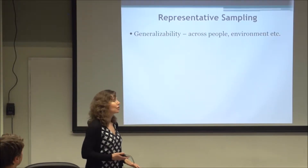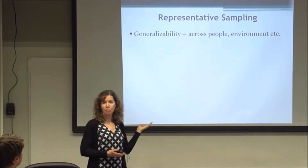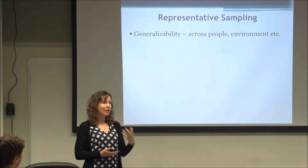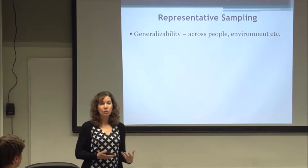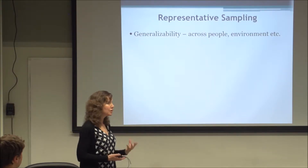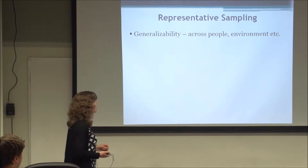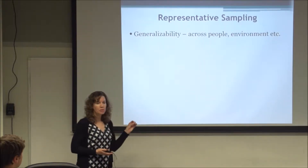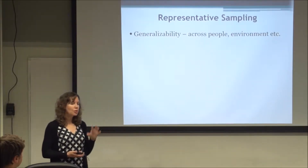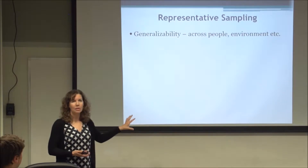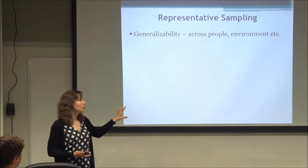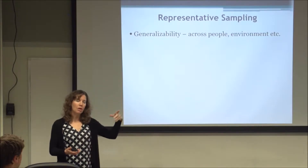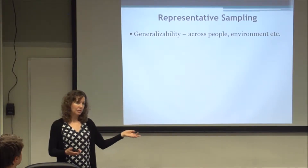Sometimes in the literature there are not measures available, and then you're in the position of having to create a measure and show that you're using a good measure. There are some ways for being able to do that. The other thing you want to be able to do is show that your data can generalize across people and across environments.